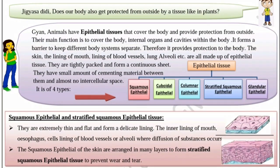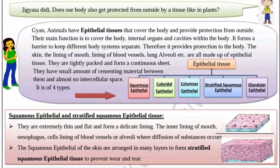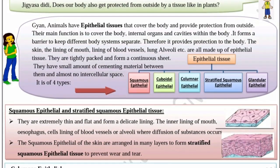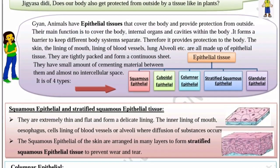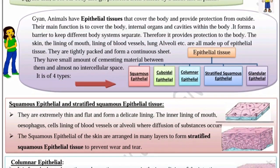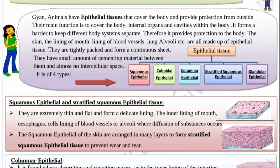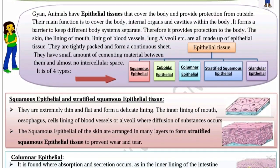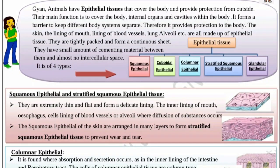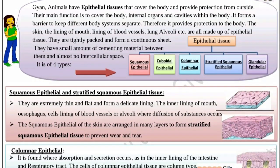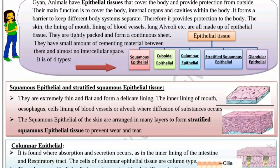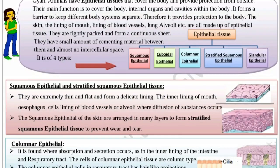Epithelial cells are tightly packed and form a continuous sheet. They have a small amount of cementing material between them and almost no intercellular space. There are four types: squamous epithelial, cuboidal epithelial, columnar epithelial, stratified squamous epithelial, and glandular epithelial.